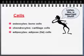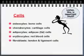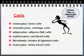Adipocytes are fat cells. Erythrocytes, most of you may remember from bio, as red blood cells. Fibroblasts are a general name for the cells found in tendons and ligaments — a 'blast' is a cell that produces something, so fibroblasts actually produce the fibers found in tendons and ligaments. And leukocytes, which you may also remember from bio, as white blood cells.